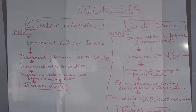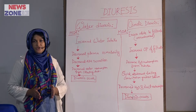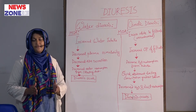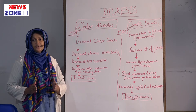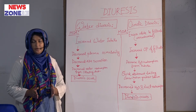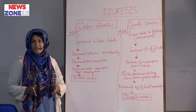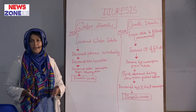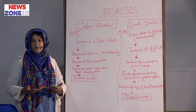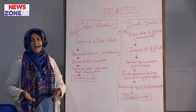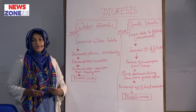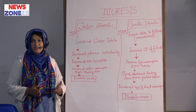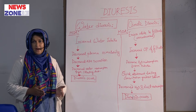Diabetes insipidus is a clinical condition characterized by the deficiency of antidiuretic hormone. The ability of antidiuretic hormone is to reabsorb water from the collecting duct. Due to its deficiency, water reabsorption fails, so water diuresis occurs in the case of diabetes insipidus.